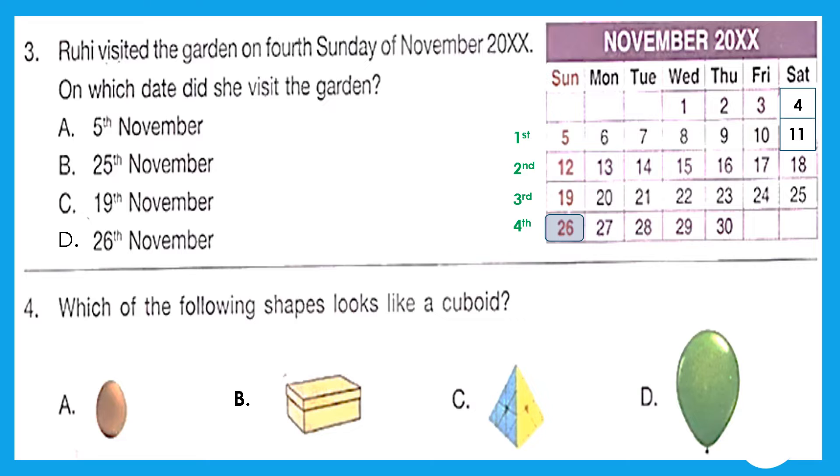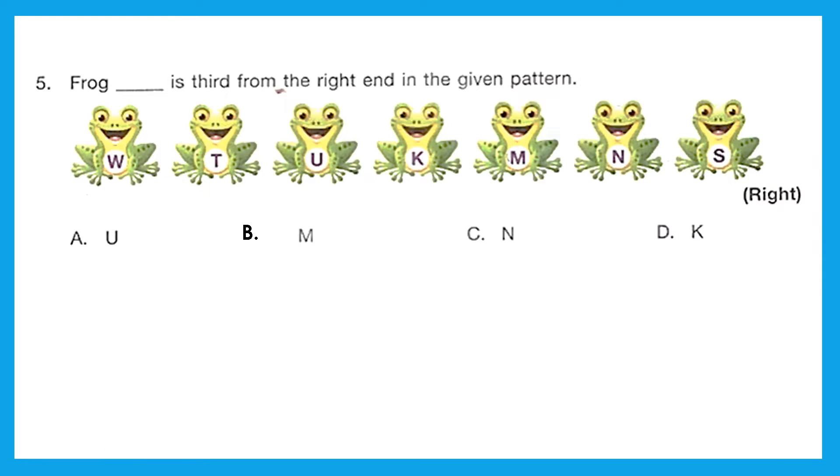Question 4: Which of the following shapes looks like a cuboid? Question 5: Frog is third from the right end in the given pattern. Where is the right end? Okay, we found it. Now we have to find the third frog: first, second, third. M is the third frog from the right end. Option B is the right answer.